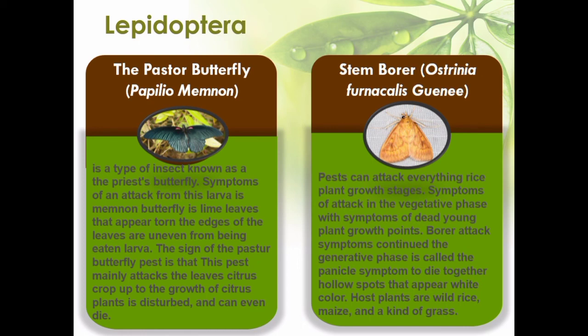The jengkal caterpillar is a type of pest that attacks legume plants. Larval attacks occur in vegetative and generative stages, with young instar larvae causing white spots on leaves. The buster butterfly, Papilio memnon, is known as the brisk butterfly, whose larvae cause lime leaves to show uneven edges from being eaten by the larvae.